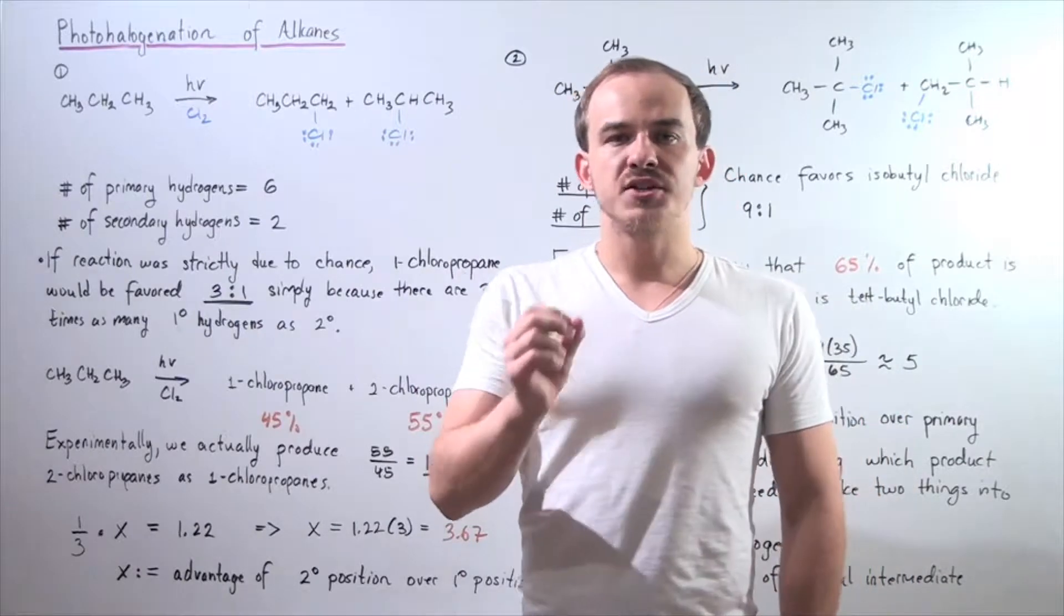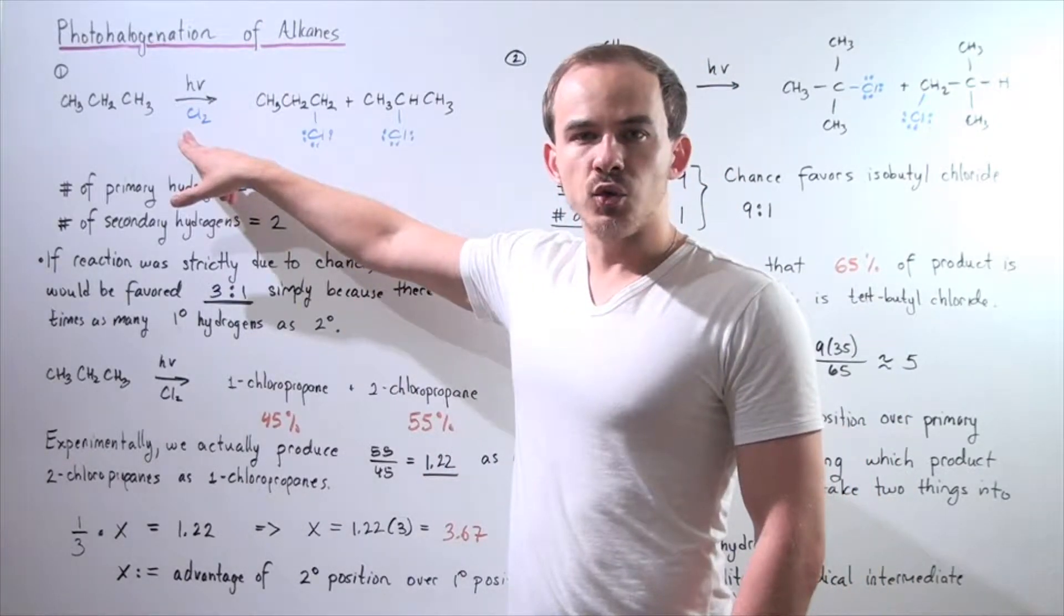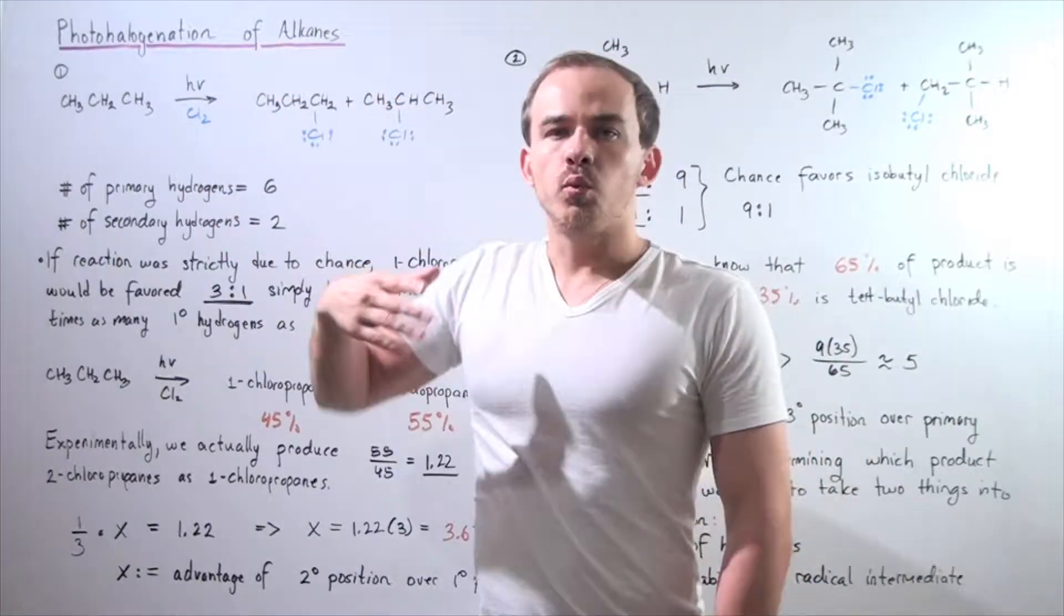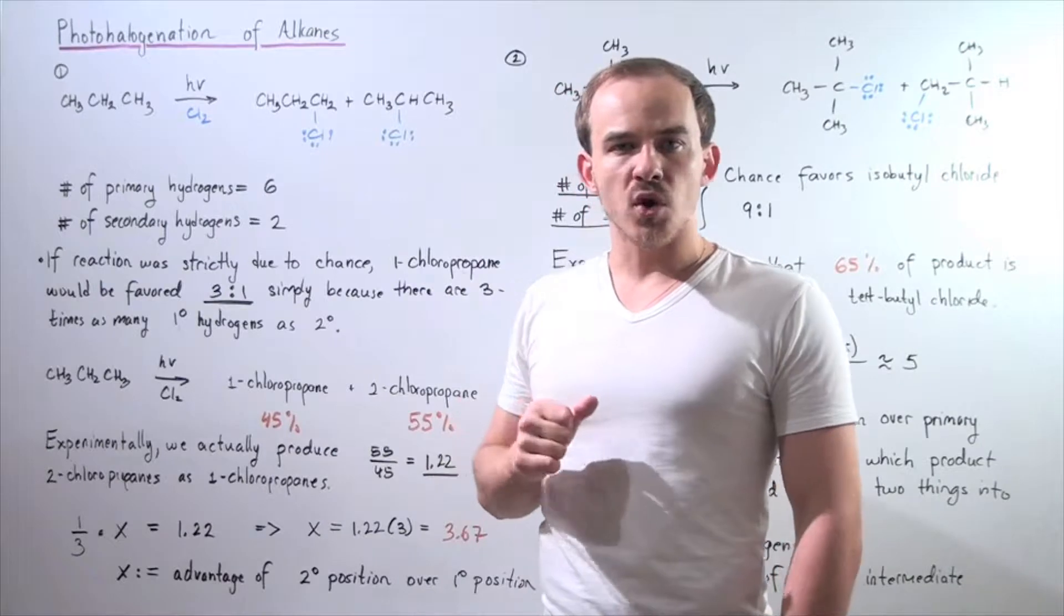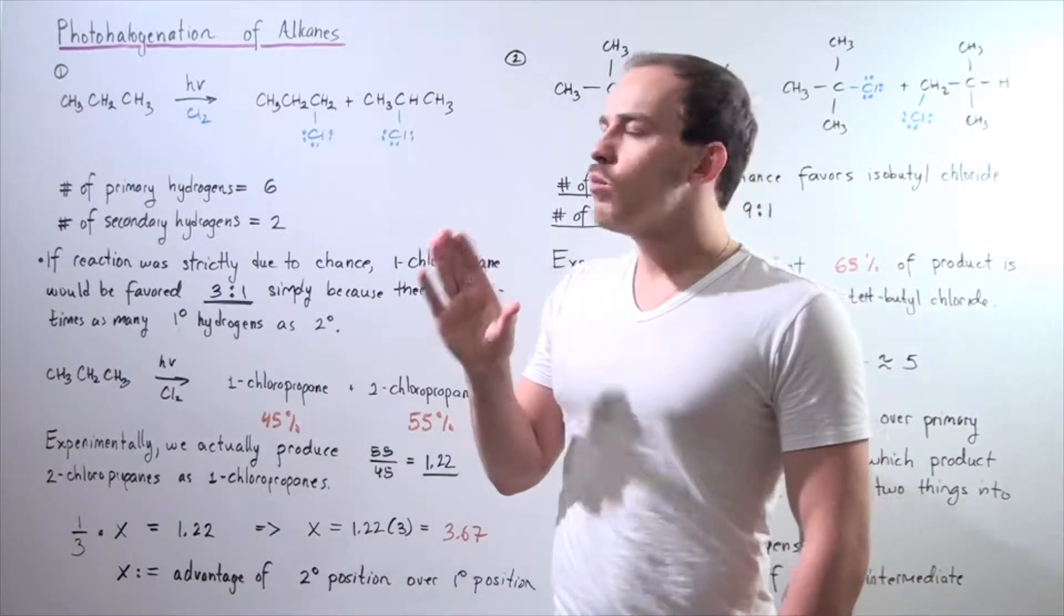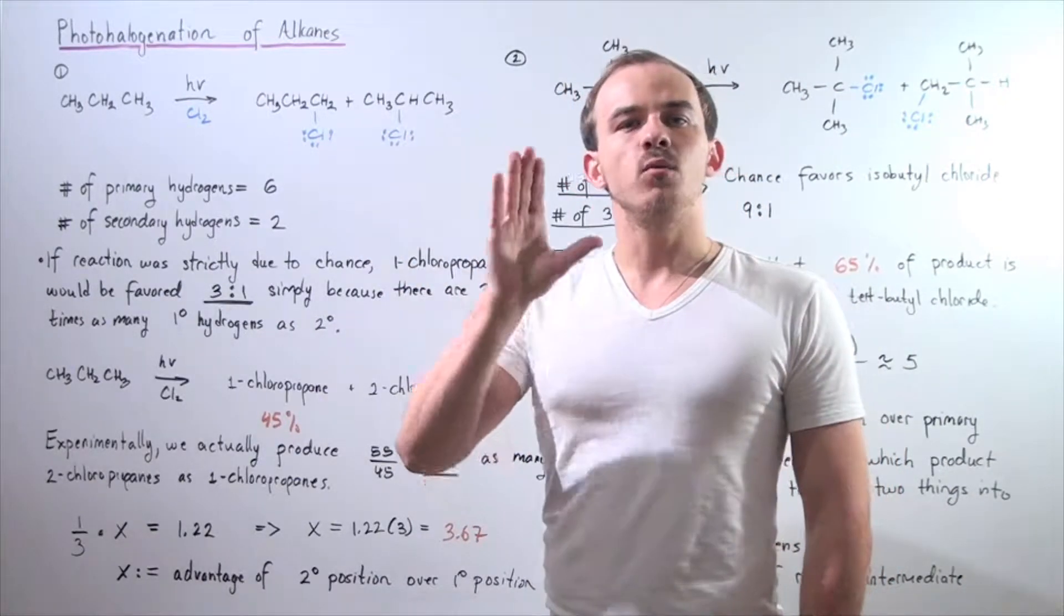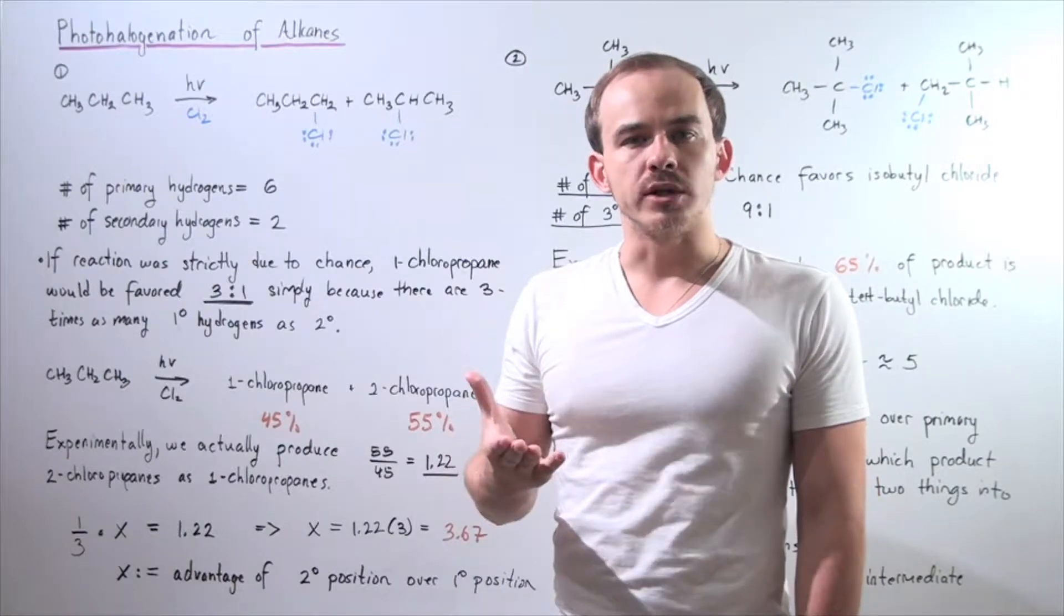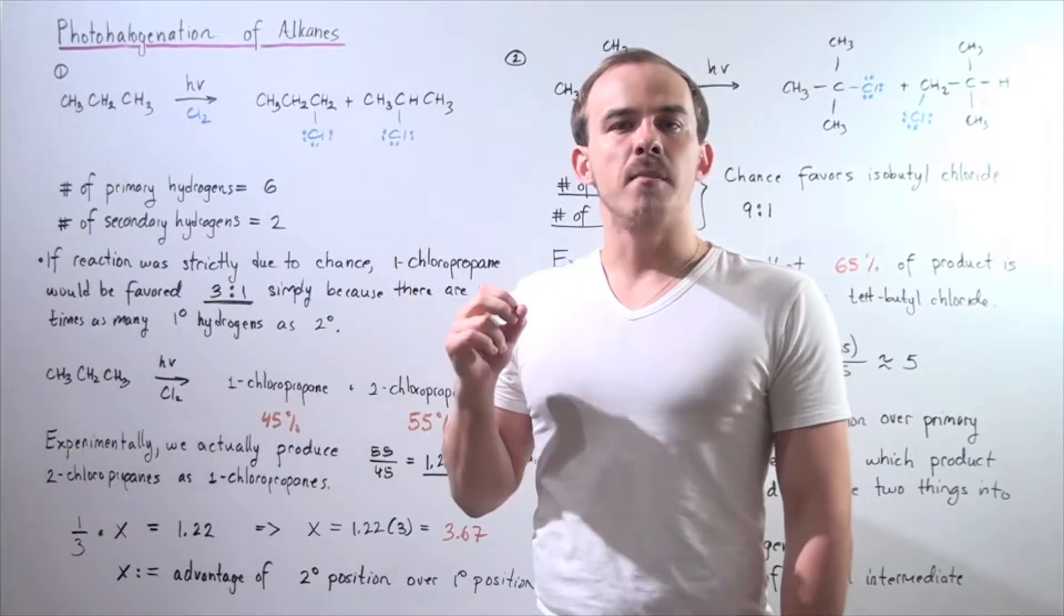Now what happens if we mix propane in the presence of a chlorine molecule and light? Well we produce the following two products. We produce one chloropropane, shown here, and two chloropropane, shown here. Now we want to determine which one of these products is the one that predominates. In other words, which one is the major product and which one is the minor product.